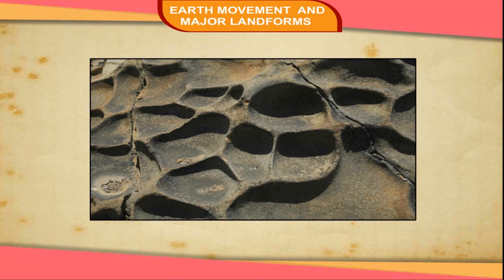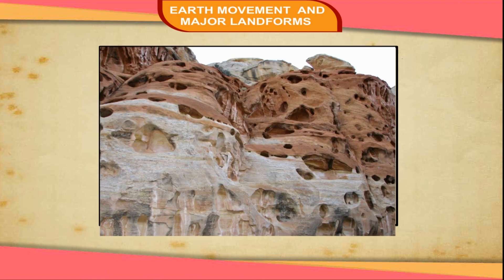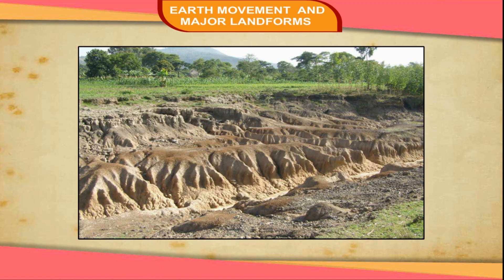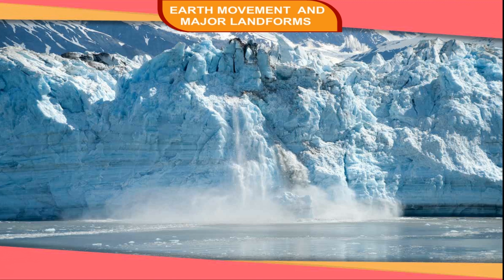Major Landforms. The landscape is being continuously worn away by two processes: weathering and erosion. Weathering is the breaking up of rocks on the Earth's surface. Erosion is the wearing away of landscape by different agents like water, wind, and ice. The eroded material is carried away and eventually deposited. The process of erosion and deposition creates different landforms on the surface of the Earth.